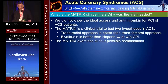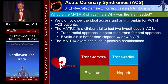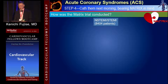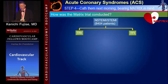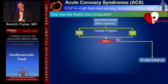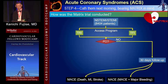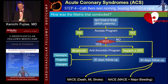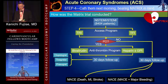MATRIX, as its name indicates, examines all four possible combinations. 8,400 non-STEMI or STEMI patients were randomized to either transradial or transfemoral access — this is called the ACS program. At the end of coronary angiogram, if the patient didn't require PCI, they were followed up for 30 days with MACE and NACE determined. If PCI was needed, those patients were randomized to either bivalirudin or heparin, with 30-day follow-up.